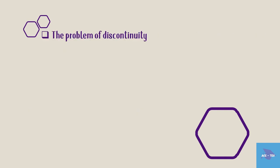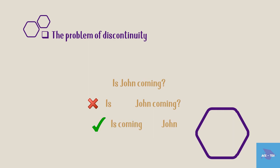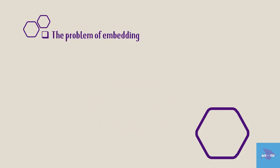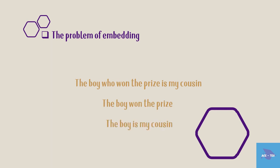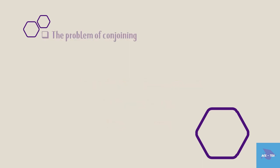The next limitation is the problem of discontinuity. For example, in 'John is coming,' 'is' is nearer to 'coming' than to 'John,' and the ICs of this sentence are 'is coming' and 'John,' not 'is' and 'John coming' — there is no way of representing this diagrammatically. The next problem is embedding: IC analysis cannot account for sentences involving embedding, such as 'The boy who won the prize is my cousin,' which has two sentences embedded in it. Next is the problem of conjoining — IC analysis cannot handle conjoining structures like 'I will go and meet him.'